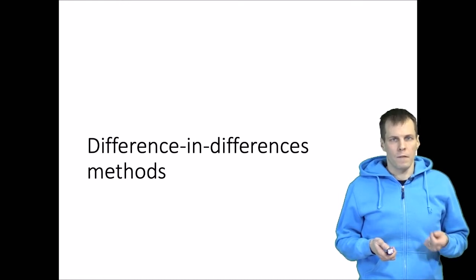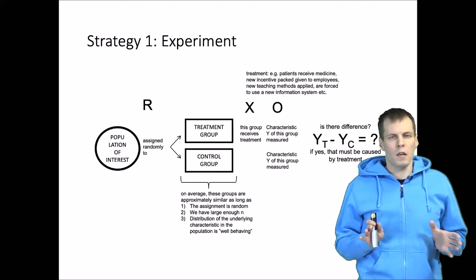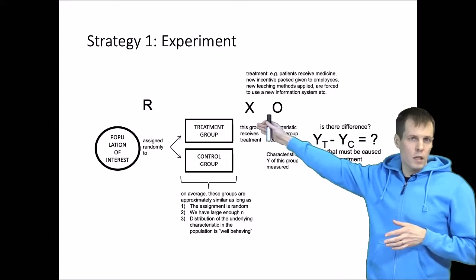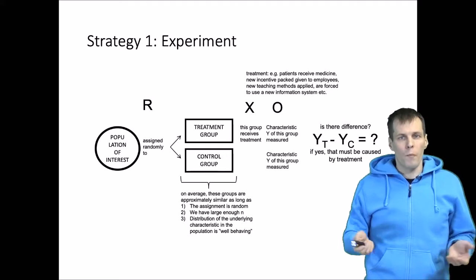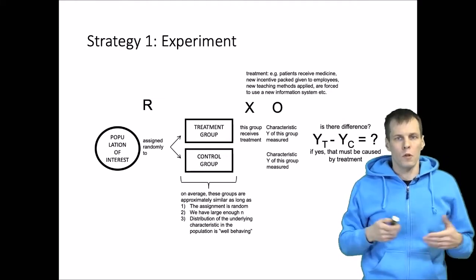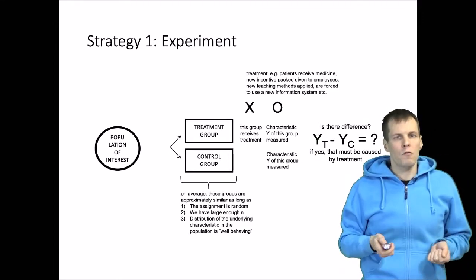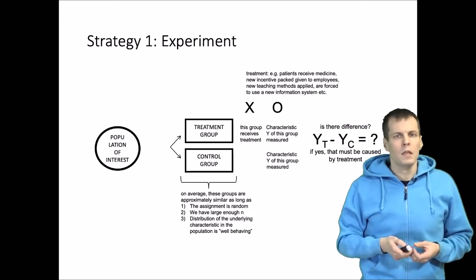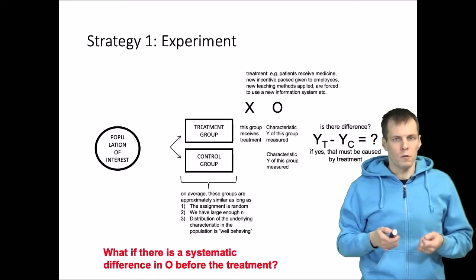Let's take a look at what difference in differences actually does. In experimental research, the key idea is randomization — because of randomization, treatment and control are comparable or identical in large samples, allowing valid causal claims. The problem arises when randomization is missing, because the treatment and control may be different to start with.